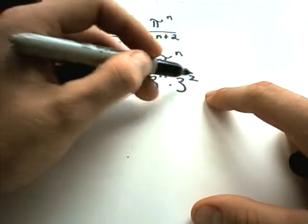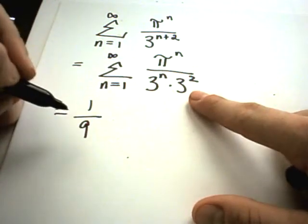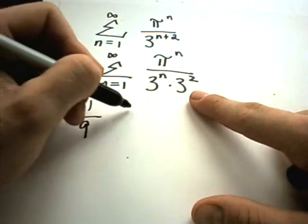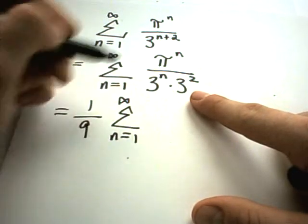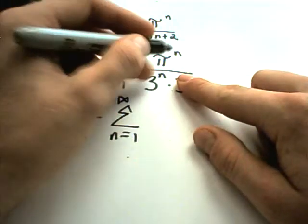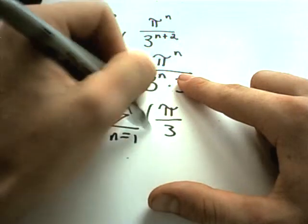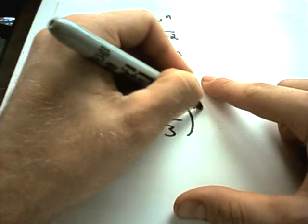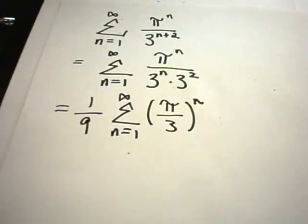I can pull the 3 squared out front, the 1 over 3 squared. That'll give me 1 ninth. So I'm getting rid of the 3 squared here. And I'm left with the series from n equals 1 to infinity. And so I've pulled out the 3 squared. I've now got pi to the n over 3 to the n. So I can write that as pi over 3 to the n. So again, I now see a number raised to a variable power.